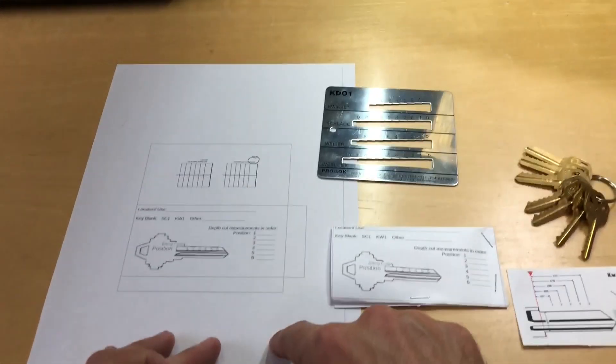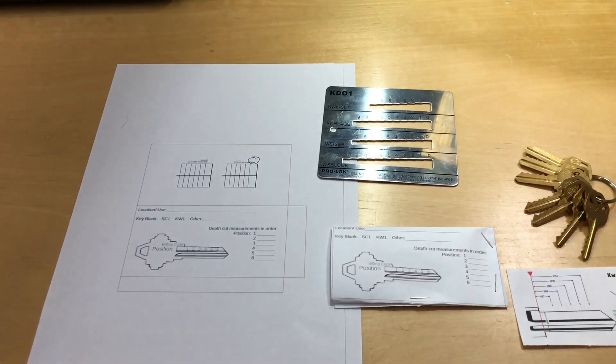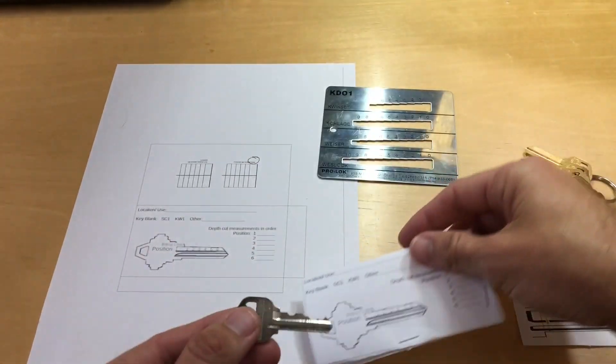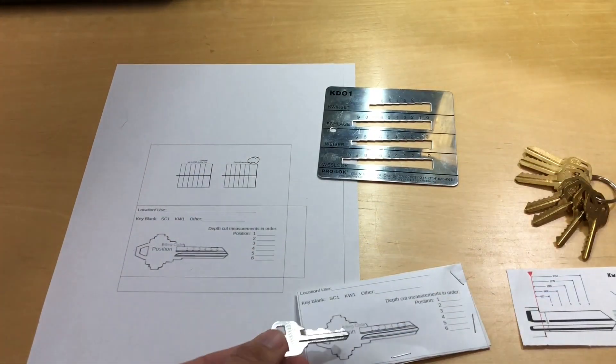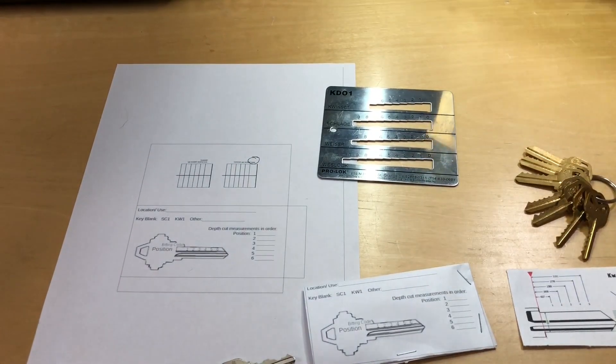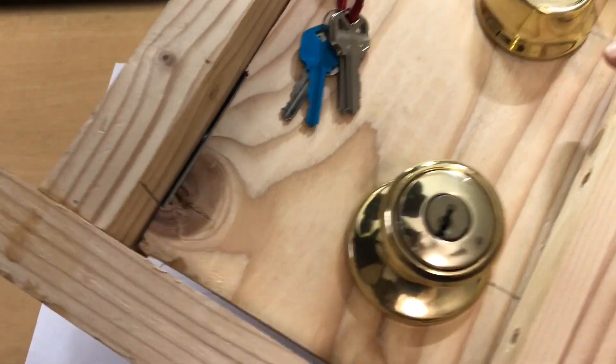So I have these printout sheets available on my web store in our digital download packs. You print these out and fold them up, make a little pocket so that when you're in the field, you can grab the bitting from a key. Where are we at? Well, it's the key for this training stand door.